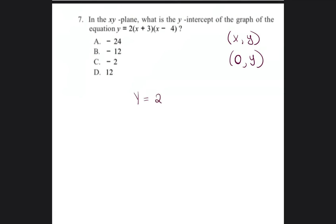So we're going to take the equation y equals 2 times x plus 3, times x minus 4. We're going to multiply this equation out. So we're going to distribute the 2. 2 times x is 2x. 2 times 3 is 6. Then we're going to continue to multiply it out.